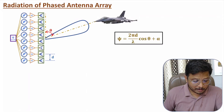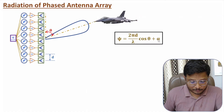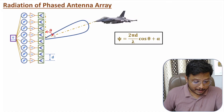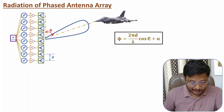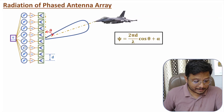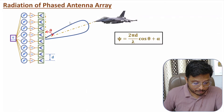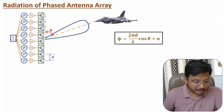In between consecutive elements, the total phase shift is psi = 2πd/λ · cosθ + α. Here, d is the spacing between two consecutive elements, and theta is the angle of radiation with respect to the axis of the antenna array. Alpha is the initial phase provided by the phase shifter, and its value is defined by the phase controller. As the target moves, we need to steer the beam by changing the value of the phase shifter.